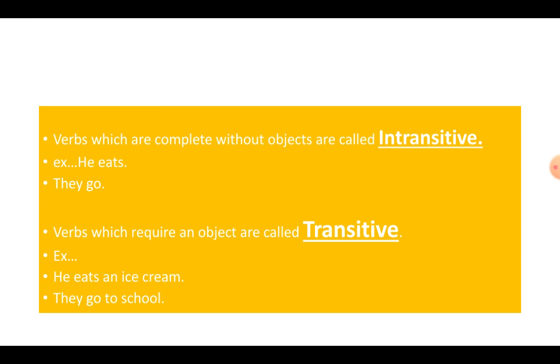Now, if I say, he eats an ice cream. Everybody feeling, and I want to have. Okay. He eats an ice cream. Ice cream is the object to the verb eats. They go. They go to school. School is the, where are they going? They are going to school. So, school is the object to the verb go.